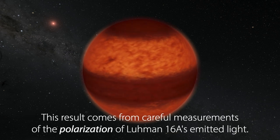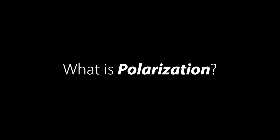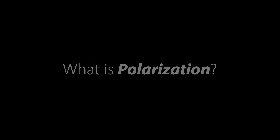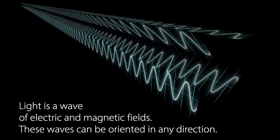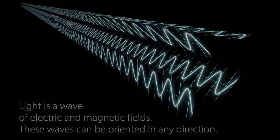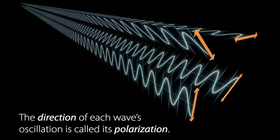The result comes from careful measurements of the polarization of Luhman 16A's emitted light. Light is a wave of electric and magnetic fields. These waves can be oriented in any direction. The direction of each wave's oscillation is called its polarization.